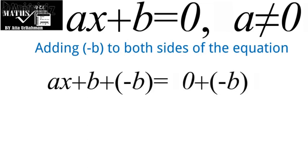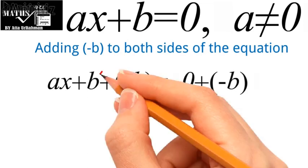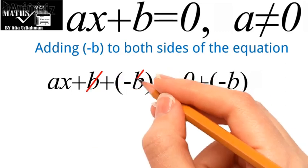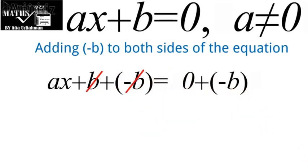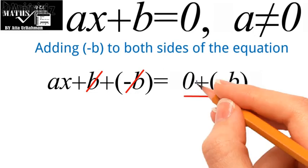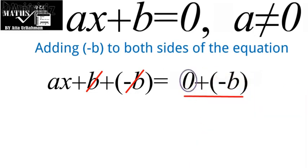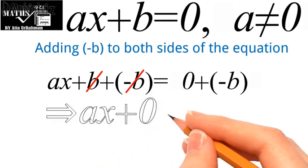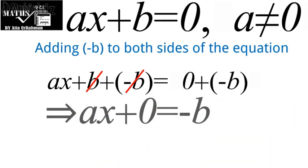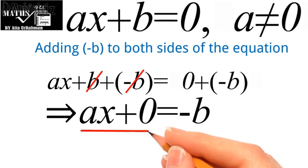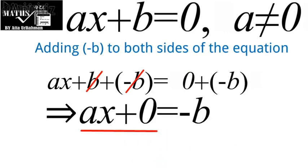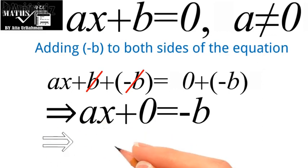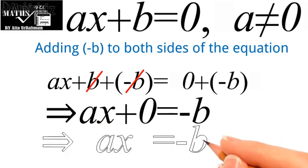In the left hand side we have b and minus b — they are the additive inverses of each other, so they will cancel each other, and on the right we have zero plus minus b. Zero is the additive identity, so adding zero with minus b gives minus b. We are left with ax plus zero equal to minus b, and by the additive identity, ax equal to minus b.